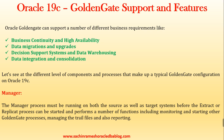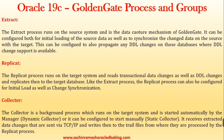Oracle GoldenGate supports features for business continuity and high availability, data migrations and upgrades, decision support systems and data warehousing, and data integration and consolidation. The first component is the manager process. The manager process must be running on both the source as well as the target system before the extract or replicate process can be started. It performs a number of functions including monitoring and restarting other GoldenGate processes, managing the trail files, and reporting.